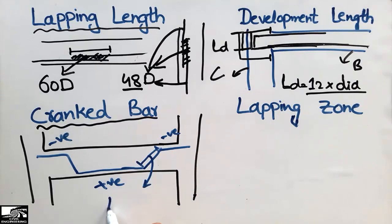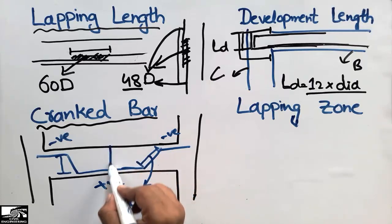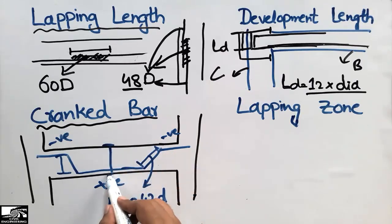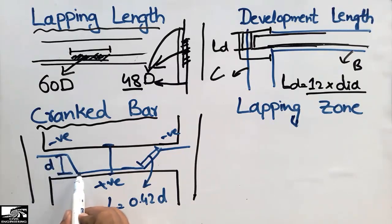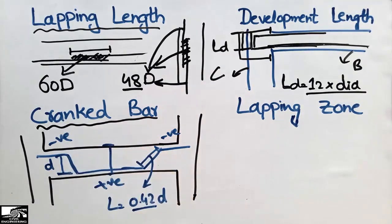The length of the crank bar is taken as L = 0.42 × D, where D is the effective depth of the beam — that is, the overall beam depth minus the clear cover. Multiplying 0.42 by D gives the required inclined length of the crank bar. This is a very important bar, usually provided in slabs and beams so that both positive and negative moments are resisted.